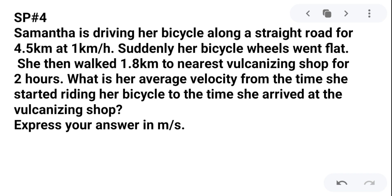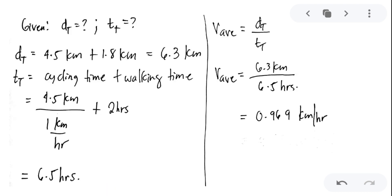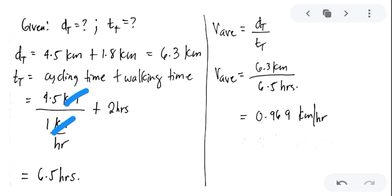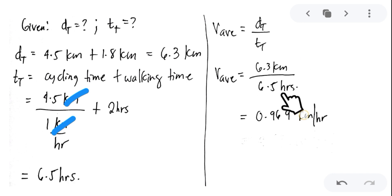Now let us find the total time, which is cycling time plus walking time. We have a distance of 4.5 kilometers at a speed of 1 kilometer per hour. Using time equals distance over speed: 4.5 over 1 equals 4.5 hours. Adding the walking time of 2 hours gives a total of 6.5 hours. The average velocity is 6.3 kilometers over 6.5 hours, which equals 0.969 kilometers per hour.